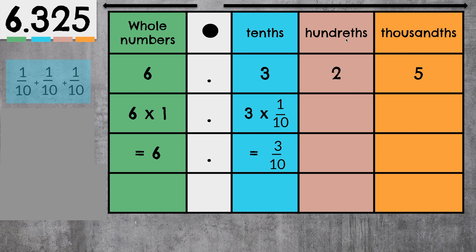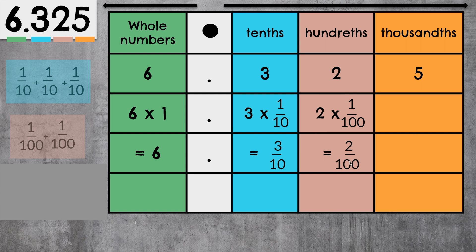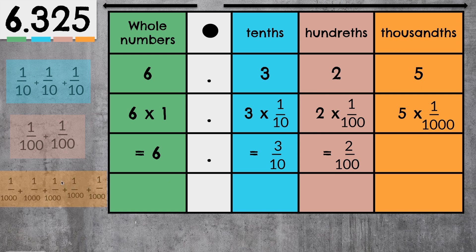We have 2 in the hundredths place, which means we have 2 one-hundredths, or 2 times 1 hundredth. That simply means we have 1 hundredth plus 1 hundredth, which equals 2 hundredths. We have a 5 in the thousandths place, which simply means we have 5 one-thousandths, or 5 times 1 thousandth — 1 one-thousandth, 5 times — which equals 5 one-thousandths.